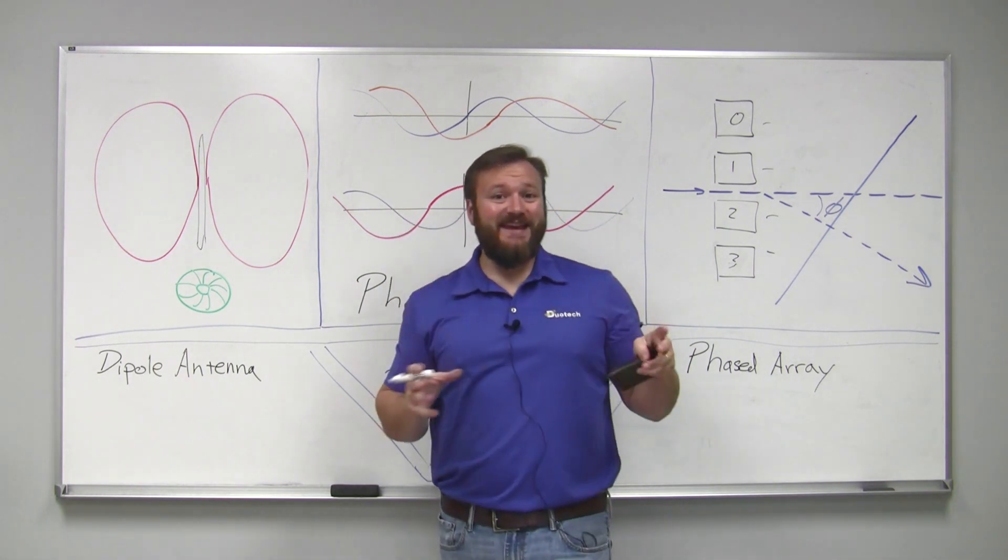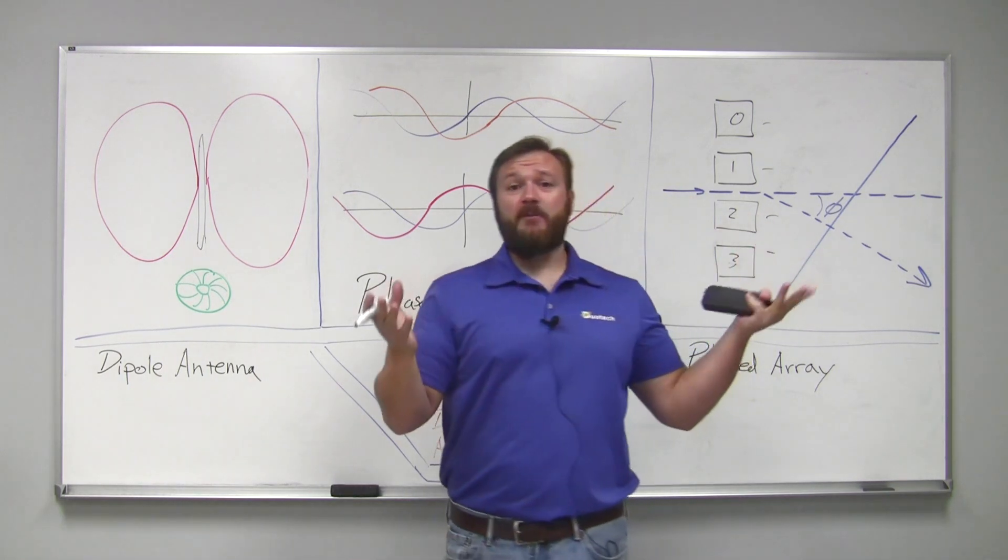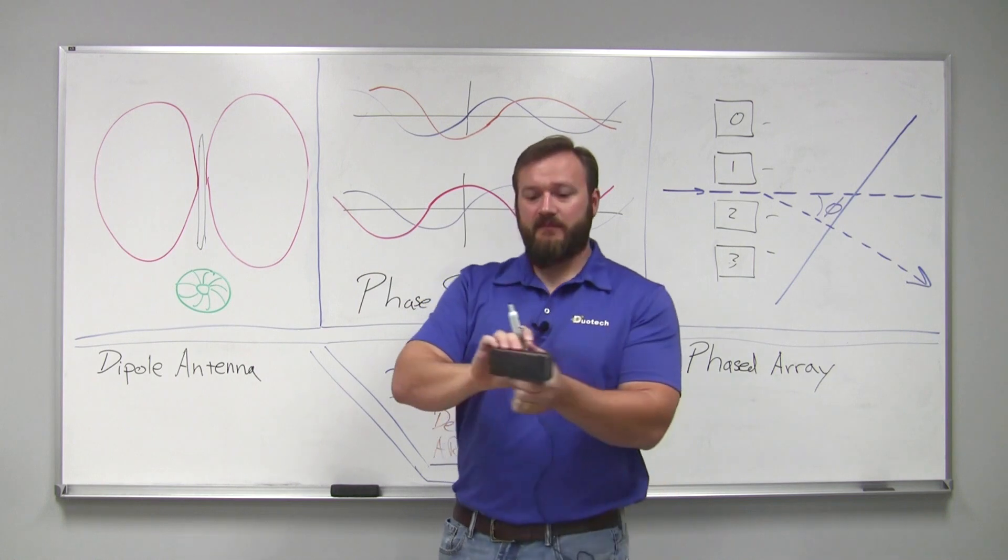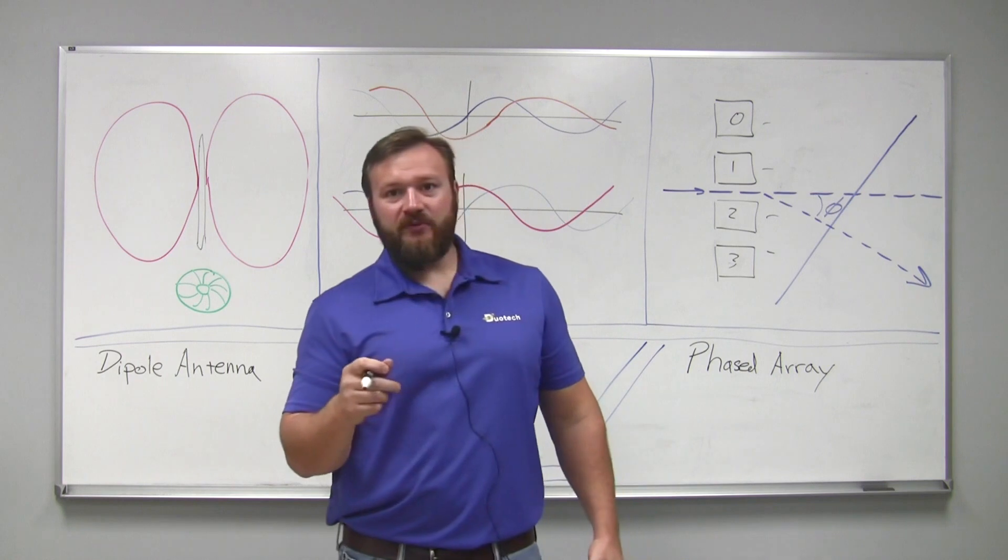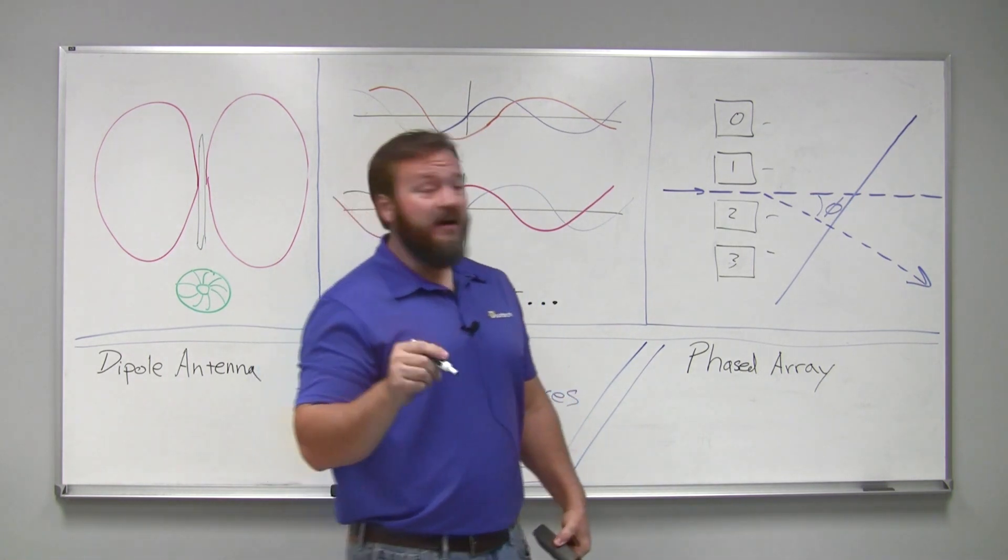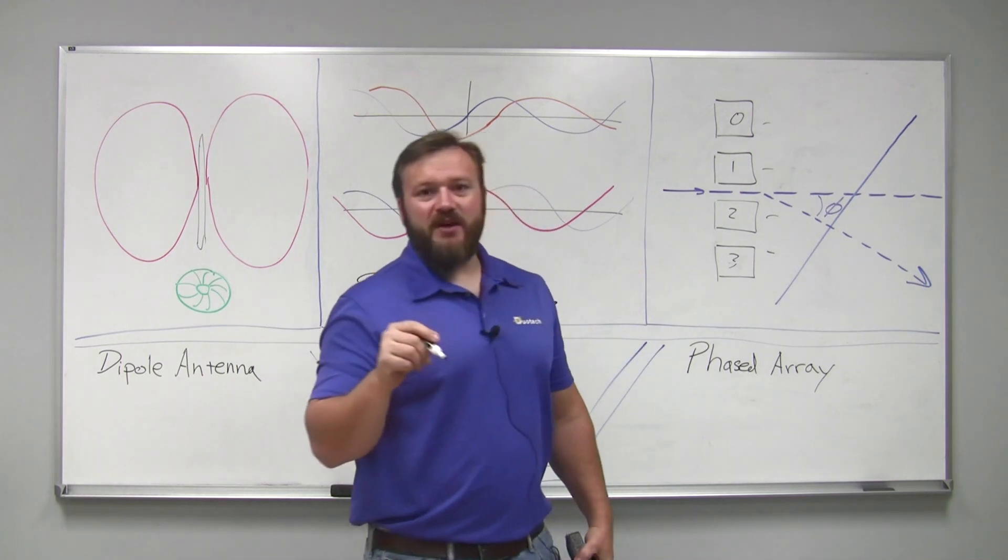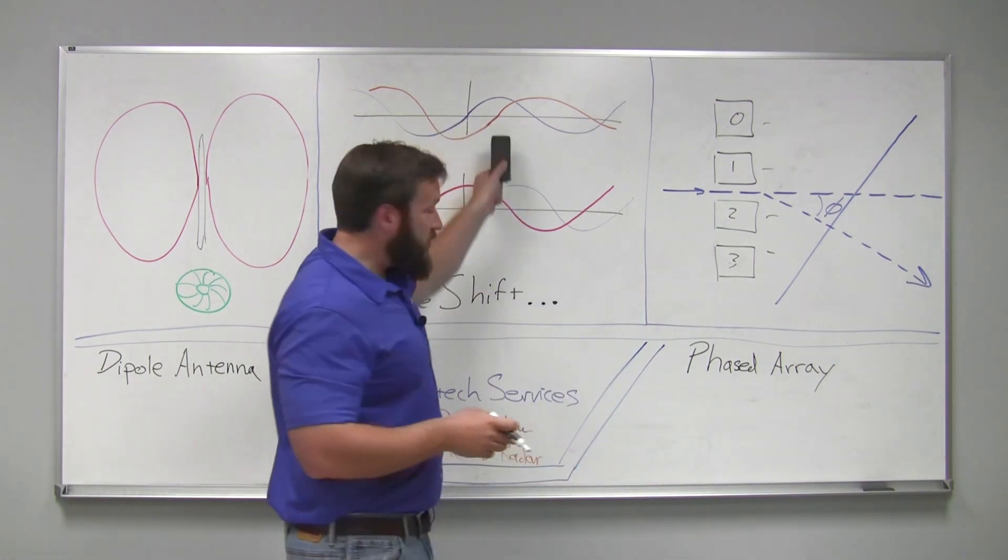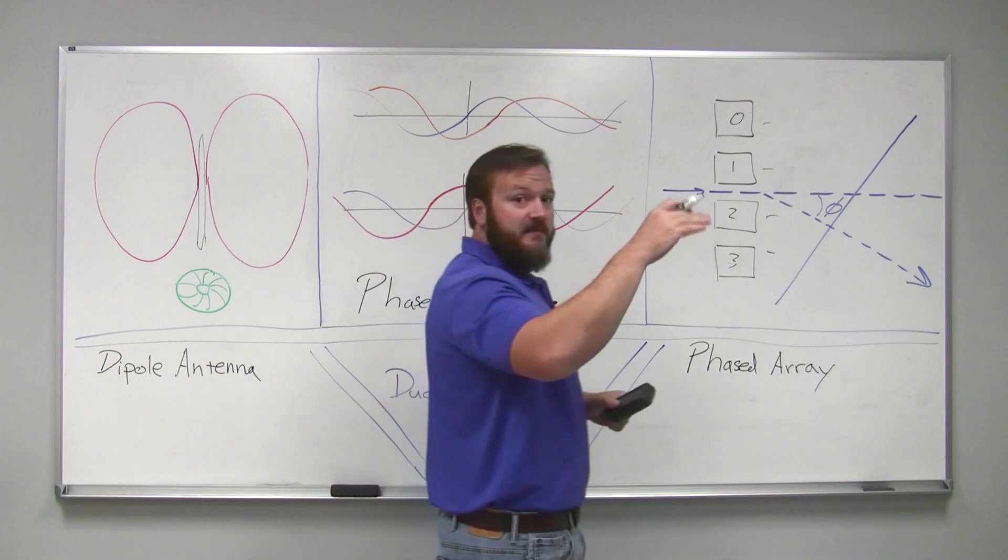When it comes to taking that energy and then looking in another direction, we can do a couple of things. We can mechanically steer that antenna and point that beam from where we're at to where we want to go. But what happens if you don't want to move the antenna? You can do an electronic scanning of an array.